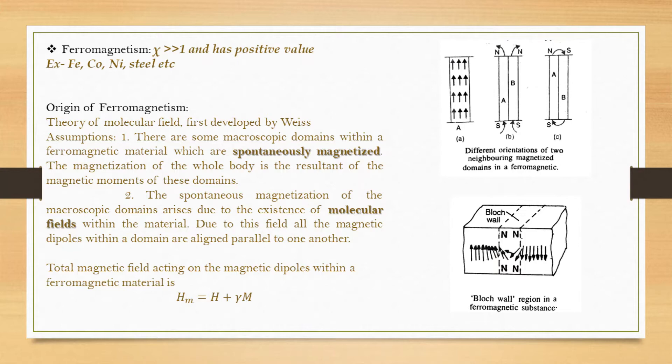For example, the well-known ferromagnetic materials are iron, cobalt, nickel, steel, etc.